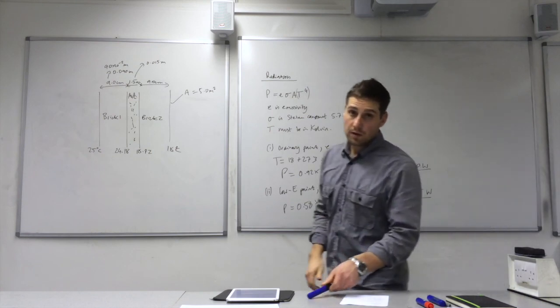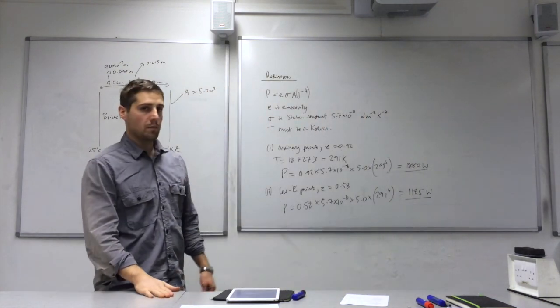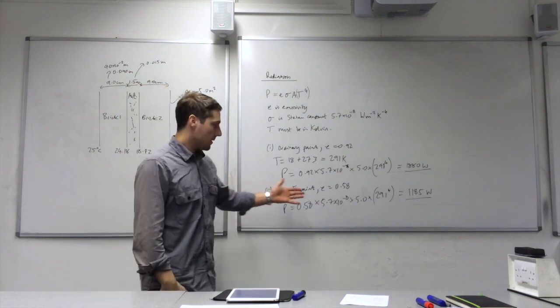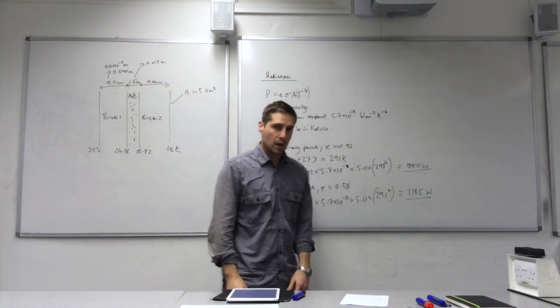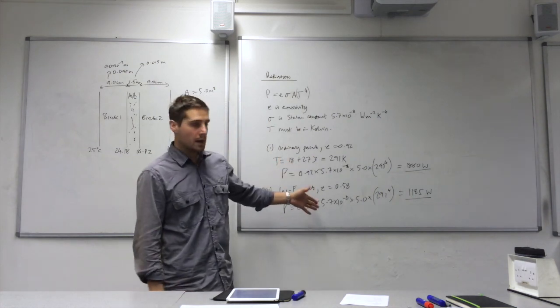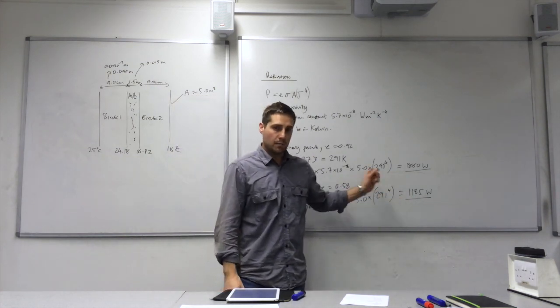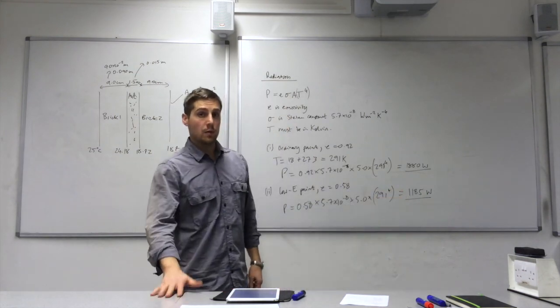And that's how you do the calculations for heat transfer by radiation. By a quick comparison of our values, we can see that this is lower than this, so the heat transfer by radiation is being reduced by using the low E paint.